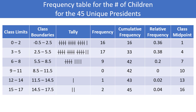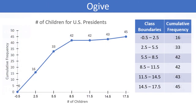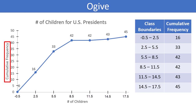Now we are ready to create an ogive, which is basically a line graph that plots cumulative frequencies. Just like with a histogram, the quantitative variable is plotted on the horizontal axis with tick marks at the class boundaries, but the vertical axis is now cumulative frequency. We connect the dots relating to the cumulative frequency of each class. Since we are graphing cumulative frequency, an ogive will always increase as you move from left to right.